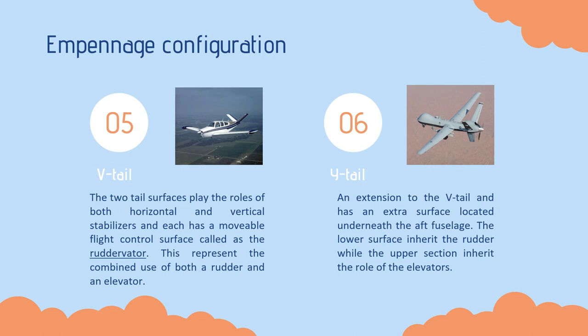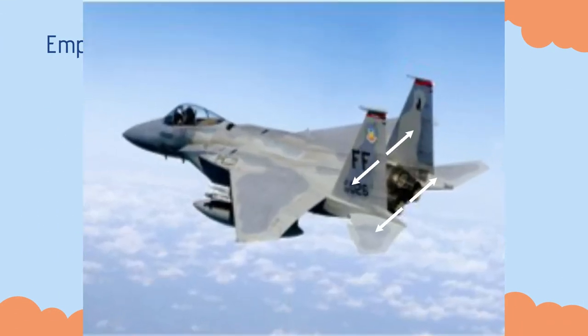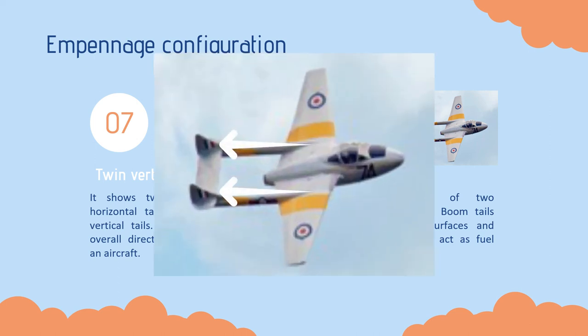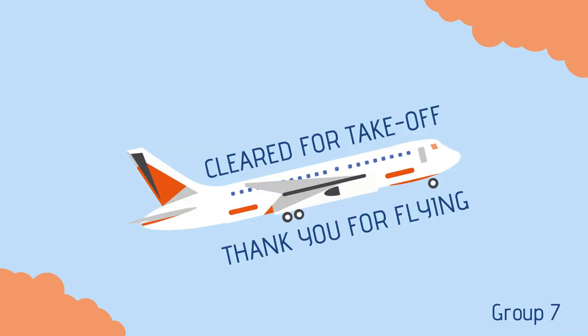The lower surface of the Y-tail inherits the rudder role, while the upper section inherits the role of the elevators. The seventh one is the twin vertical tail, which shows two separated regular horizontal tails with parallel vertical tails. It also improves the overall directional controllability of an aircraft. The eighth and last one is the boom tail. It is composed of two longitudinal booms that support the tail surfaces and structure, and may also act as fuel tanks.